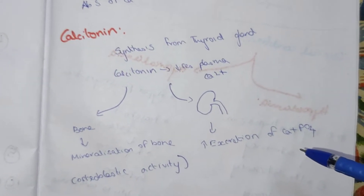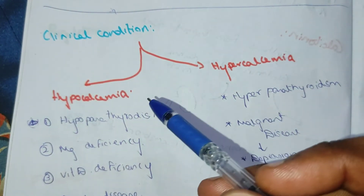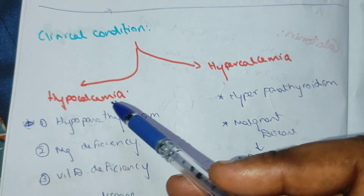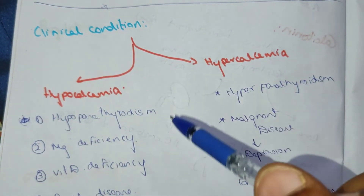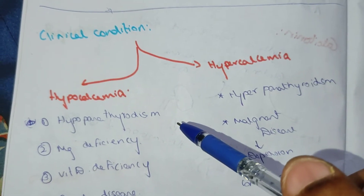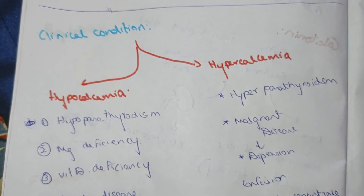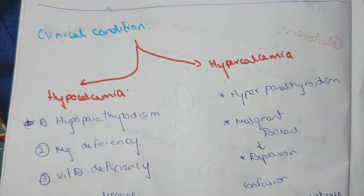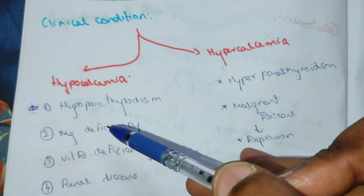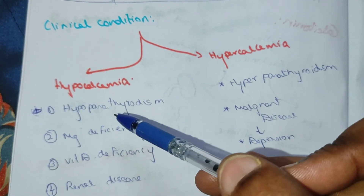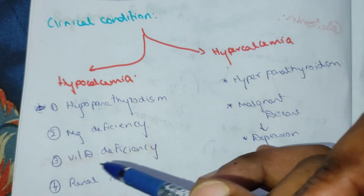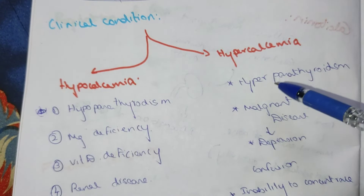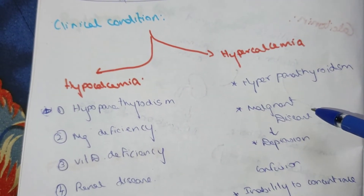The clinical conditions are hypocalcemia and hypercalcemia. Hypocalcemia is when plasma calcium falls below 9 mg percent, and hypercalcemia is when it rises above 11 mg percent. Hypocalcemia occurs in hypoparathyroidism, magnesium deficiency, vitamin D deficiency, and renal disease. Hypercalcemia occurs in hyperparathyroidism and malignant disease.